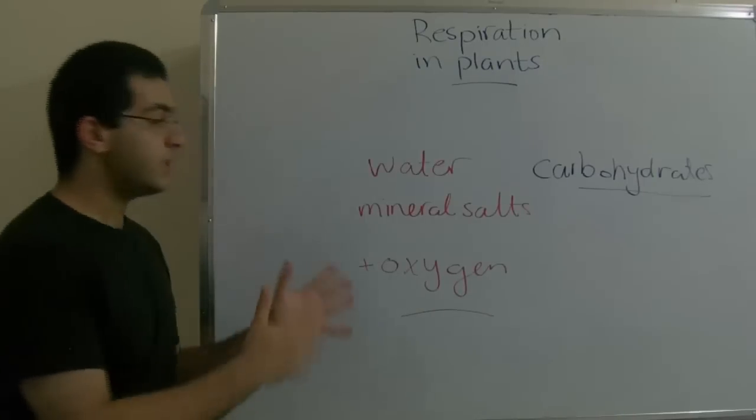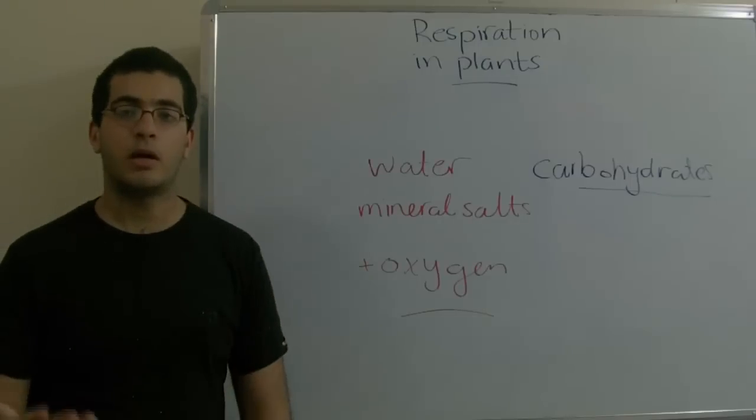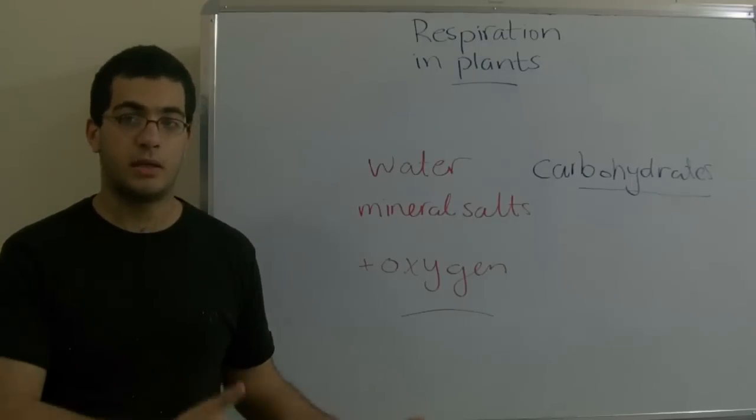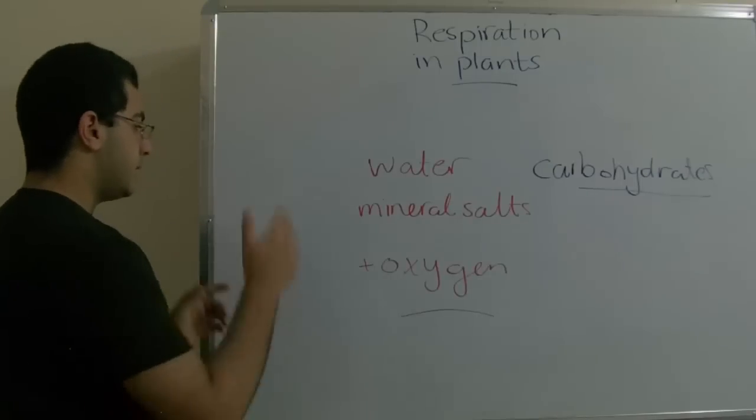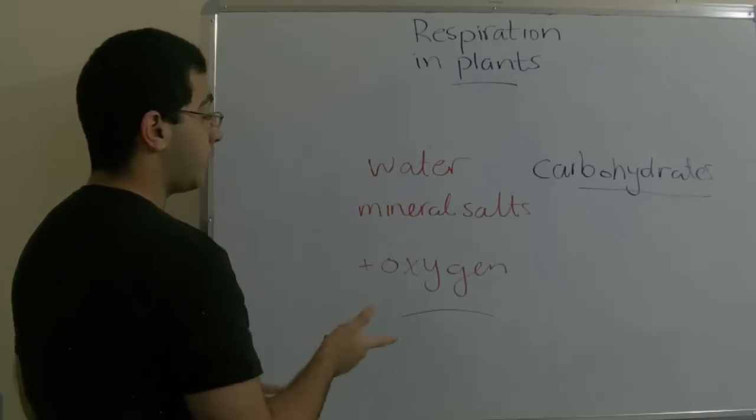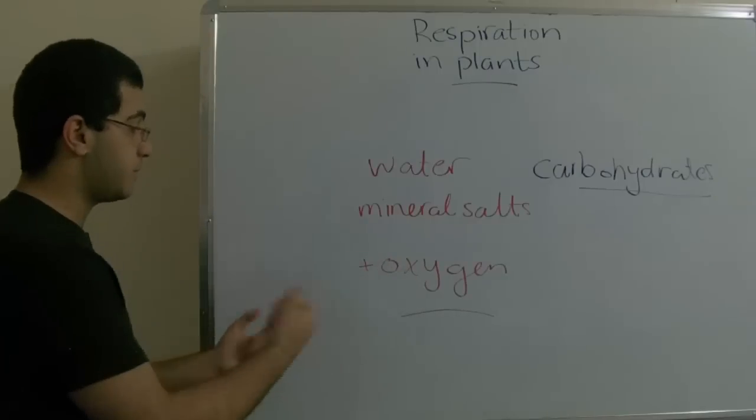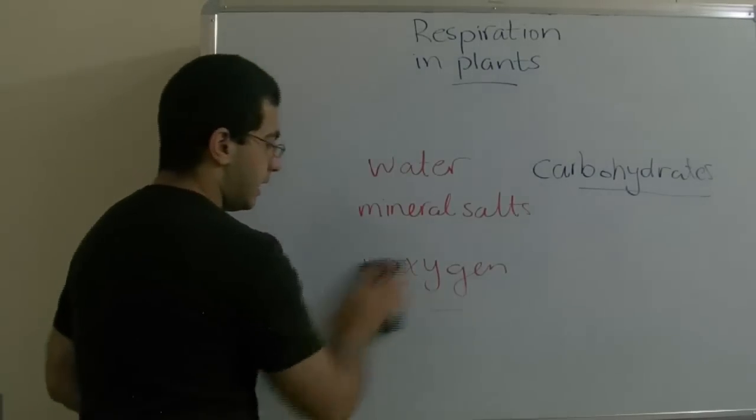After this energy is produced, there are waste materials like carbon dioxide and water. So how does the plant get rid of the carbon dioxide and how does it obtain the oxygen? Let's see.